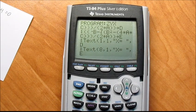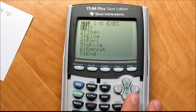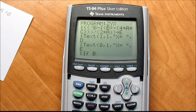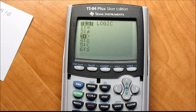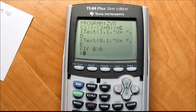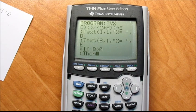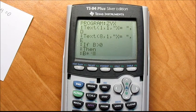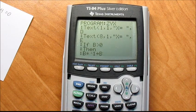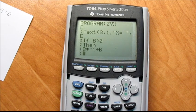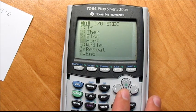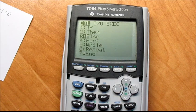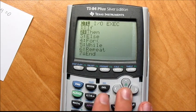And then you're going to go program, if B is greater than zero, program then, B times negative one, store as B. And then you're going to go program go to 45. Program else, program, program label 45.